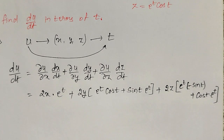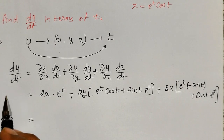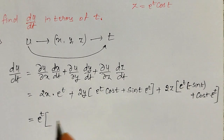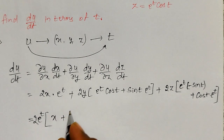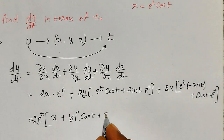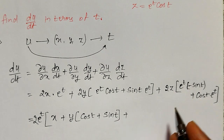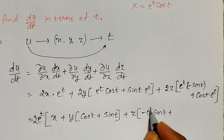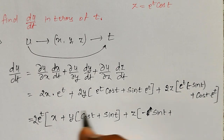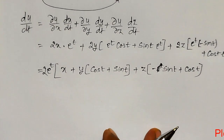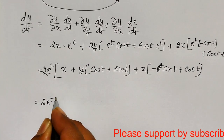The expression has a mix of x, y, z, and t, but the final answer must be in terms of t only. From all the terms, e^t and 2 can be taken as common factors. Then x from the first term remains; from the second term, (cos t + sin t) remains; from the third term, (−sin t + cos t) remains. Substituting x = e^t, the first term gives 2 · e^t · e^t.